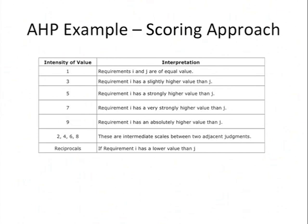You're not constrained to just the odd numbers. You can use intermediate scales between the two adjacent judgments if you want. But what happens if i is, in your estimation, lower in importance or value than j? Well, you'd simply put the reciprocal there. So if you think that element i has a strongly lower value than j, where instead of putting a 5, you'd put a 1 over 5 in the cell. And that is the way that you populate the table.